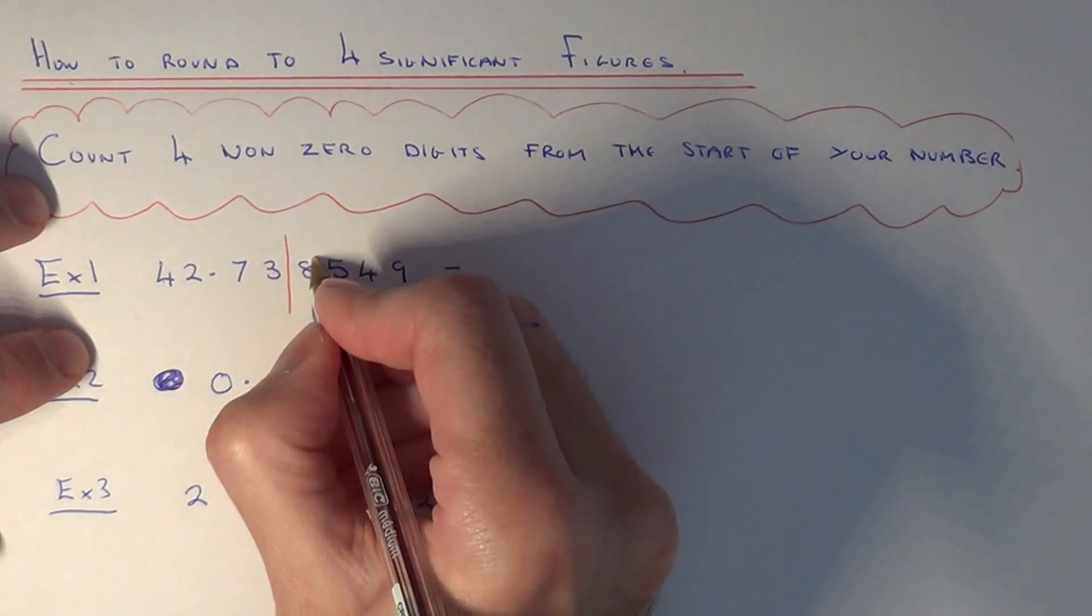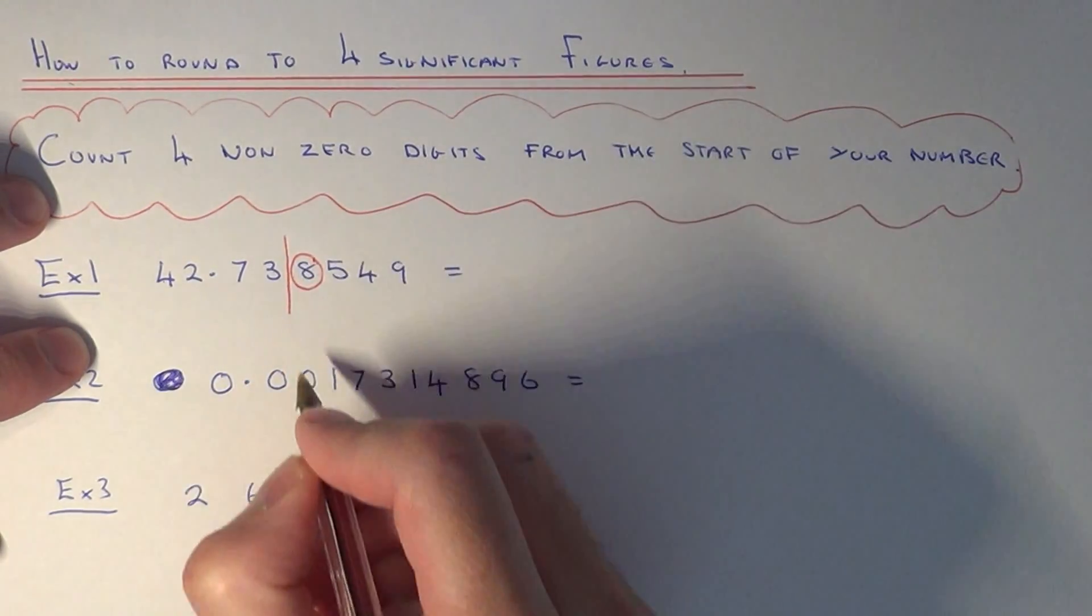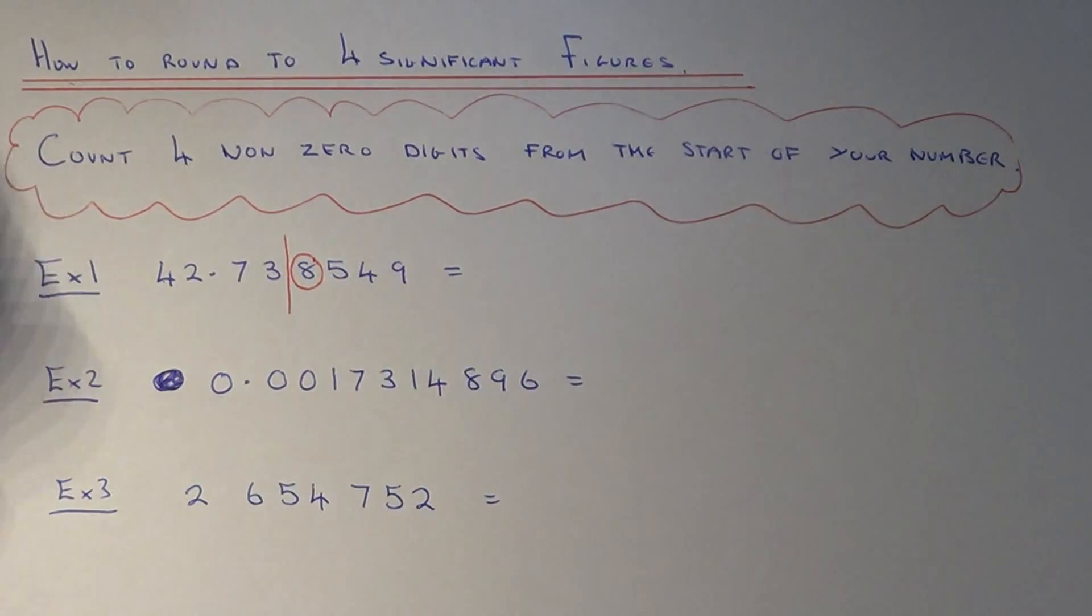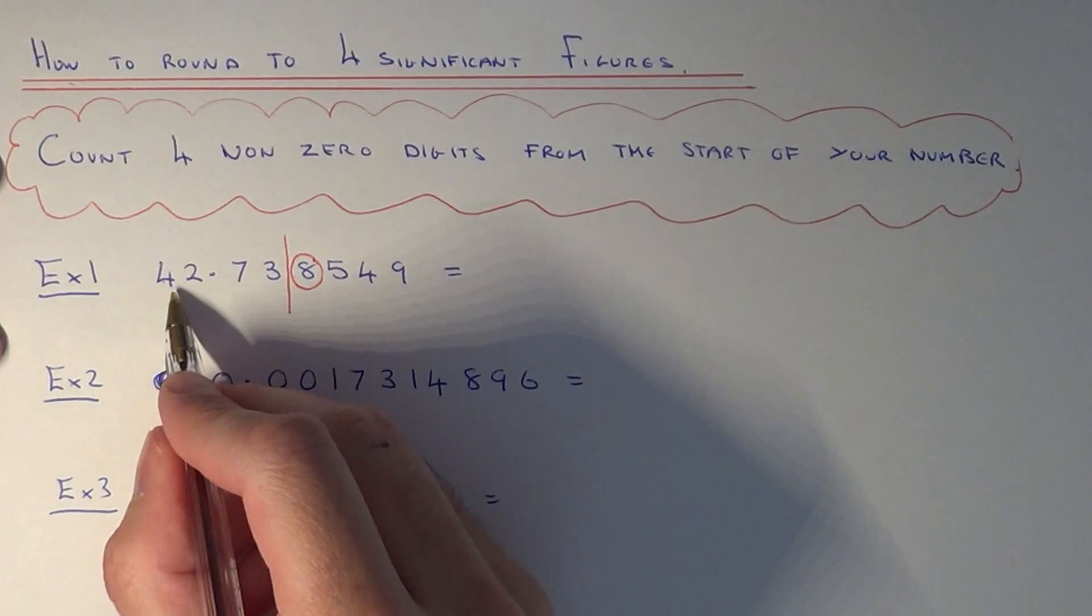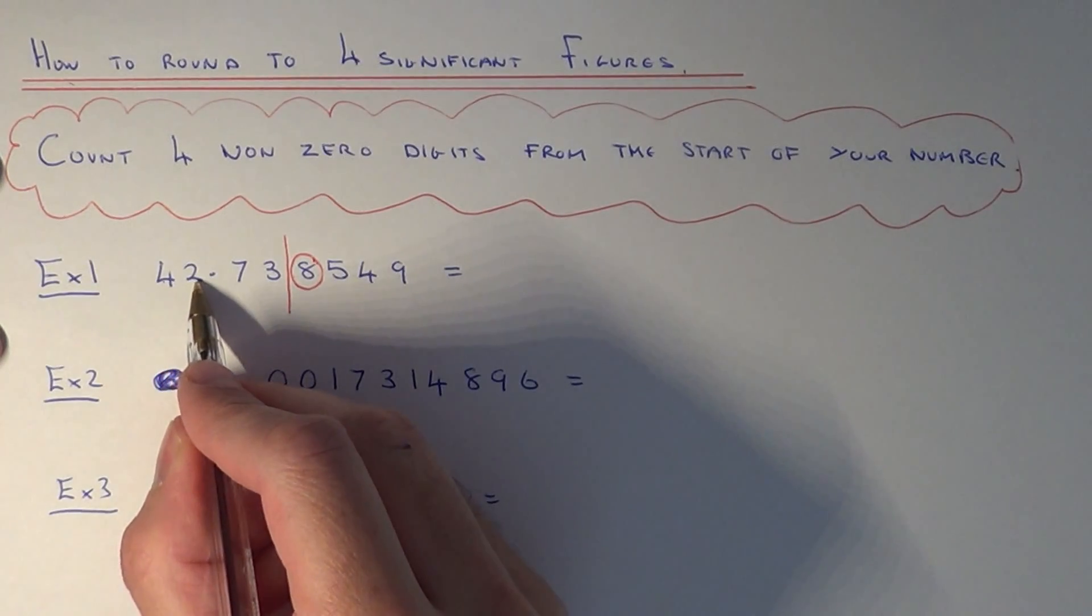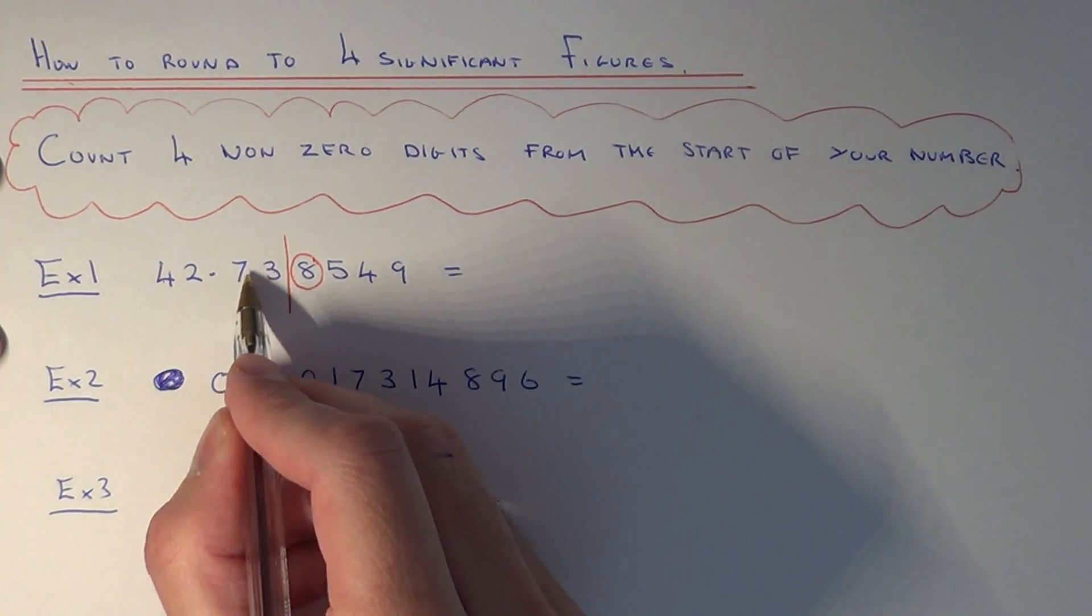To decide, we need to look at the number after the line. Since this number is five or above, we need to round the number upwards. So this means our answer to four significant figures would be 42.74.